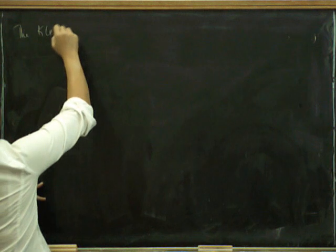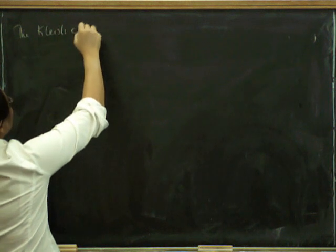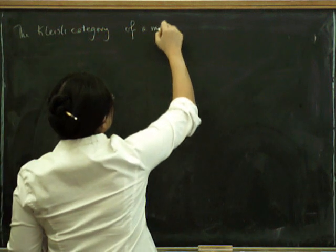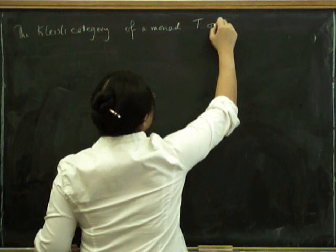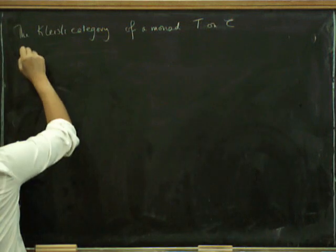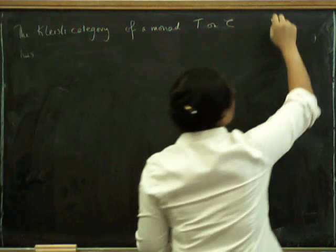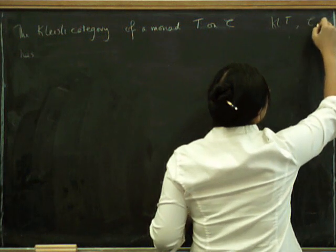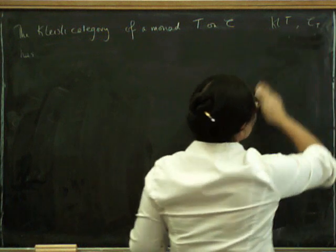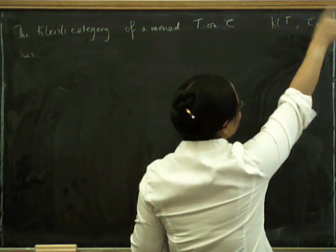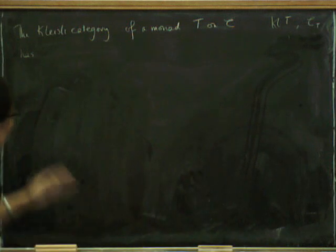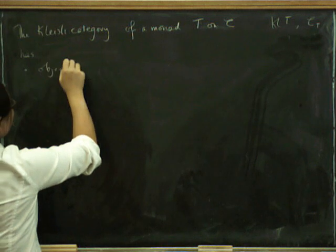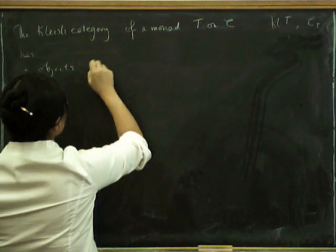The Kleisli category on the monad T on C has... Oh, by the way, this category is sometimes called KL_T, that's K-L, and it's also sometimes written C sub T. Remember last time we had the Eilenberg-Moore category, which was the upper T, and this will be the lower T, kind of the dual situation, and very, very related. Okay, so what are the objects of this category? Well, the objects are in fact just the same as the objects of C.